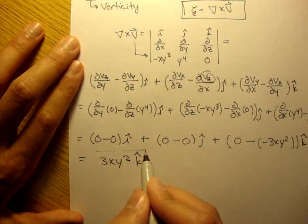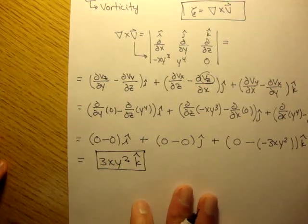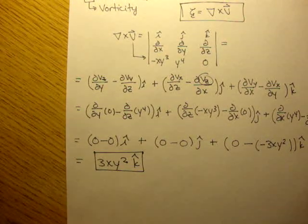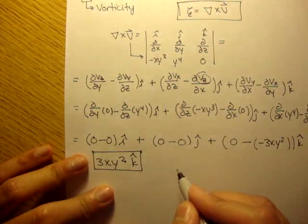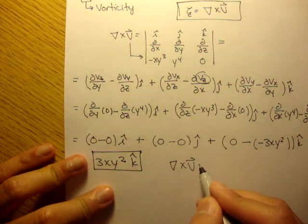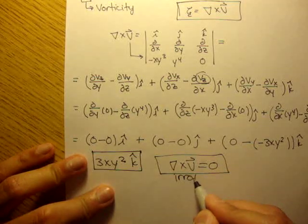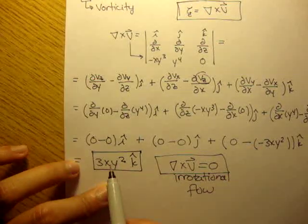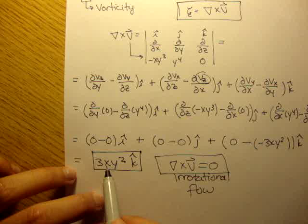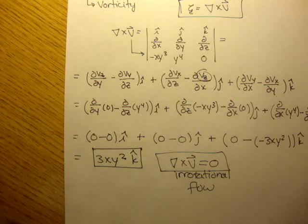So our vorticity is 3xy² in the k-direction. Now, is this flow irrotational? For the flow to be irrotational, del cross v must equal zero. Here we didn't get zero — we got 3xy². So in conclusion, this flow field is not irrotational.